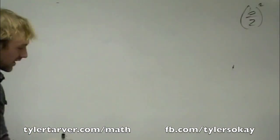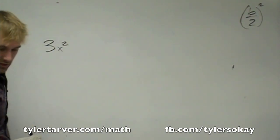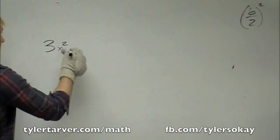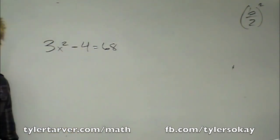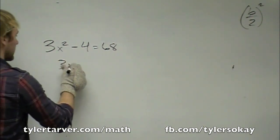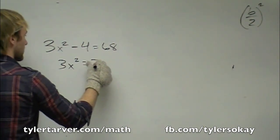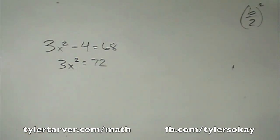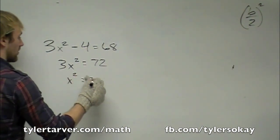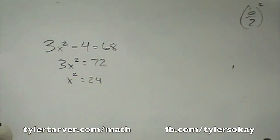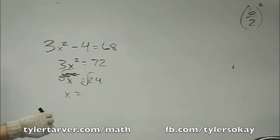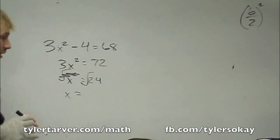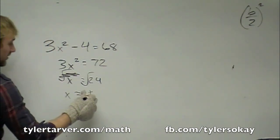So essentially, if we have an equation — say we've got 3x squared minus 4 equals 68 — the first thing we would do is get rid of the 4. 3x squared equals 72. Now our next thing we want to do is divide by 3. And then our last step, we get the radical of both sides to get rid of the square, because the opposite of squaring is square root. They were nice enough to make those two very similar. So we've got positive or negative radical 24.